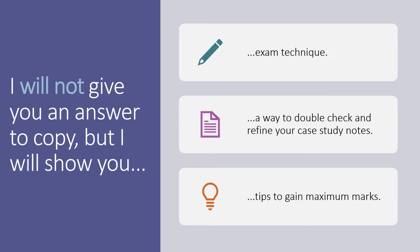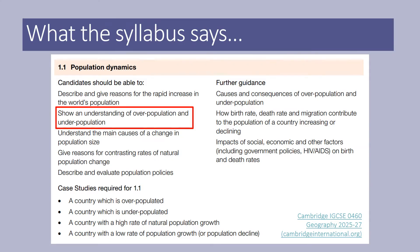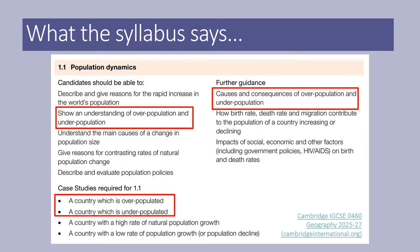This video will not give you an answer to copy, but it will show you the appropriate exam technique. It will give you a way to double check and refine your case study notes and recap on the key tips to gain maximum marks. The syllabus requires you to show an understanding of overpopulation and underpopulation, in particular the causes and consequences of both, and you need to have a country for each.